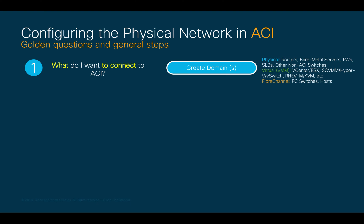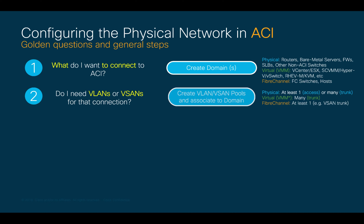The second question is, do I need VLANs or vSANs for that domain? And most of the time you do, except probably for layer 3 connections where you don't use sub-interfaces or SVIs. So, you need to create a pool of VLANs or vSANs allowed to flow through that domain.